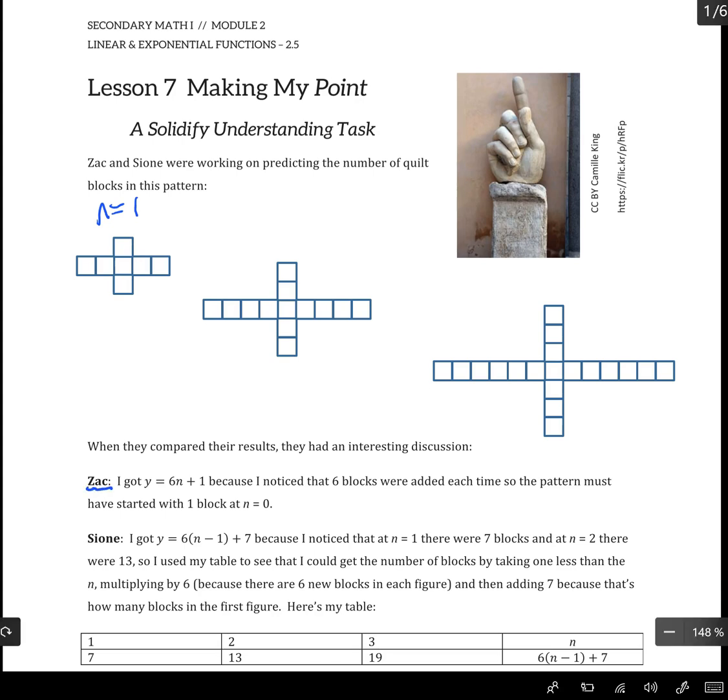So Zac said, alright, if I reverse this pattern—well first of all he noticed that it's adding 6 blocks each time, so he said if I reverse that and I go from 7 down by 6, this pattern would have started with 1 block. And so he got the rule 6n plus 1, or y equals 6n plus 1.